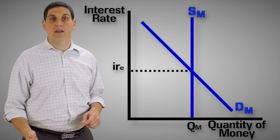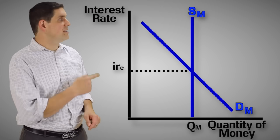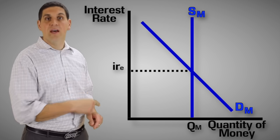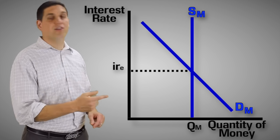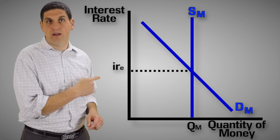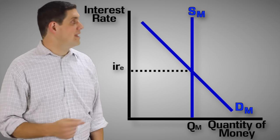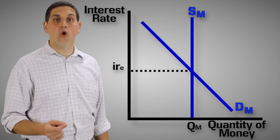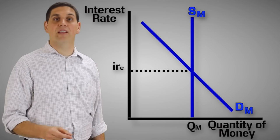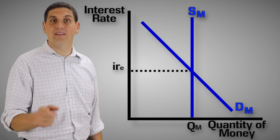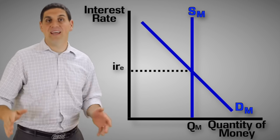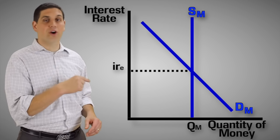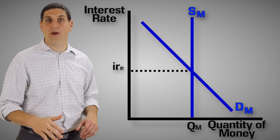Now let's look at the supply of money. Notice it's vertical. This is because it is completely unrelated to the interest rate. The money supply is set and controlled by a country's central bank — in the United States, that's the Federal Reserve. And that's it. There are no other curves. That's the graph.